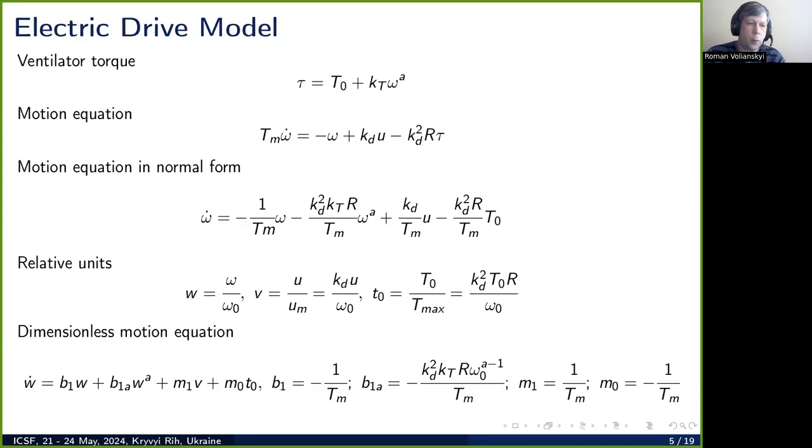We offer to solve this problem by using control theory approaches and methods. To apply them, at first we define the model for the considered electric drive. The main part of this model is a non-linear function which defines ventilator torque. This torque does not have a straightforward description because it depends on the operating condition. This condition allows us to define this function as some power function with non-integer power in the most general case. We use this function to write down the motion equation for the considered electric drive.